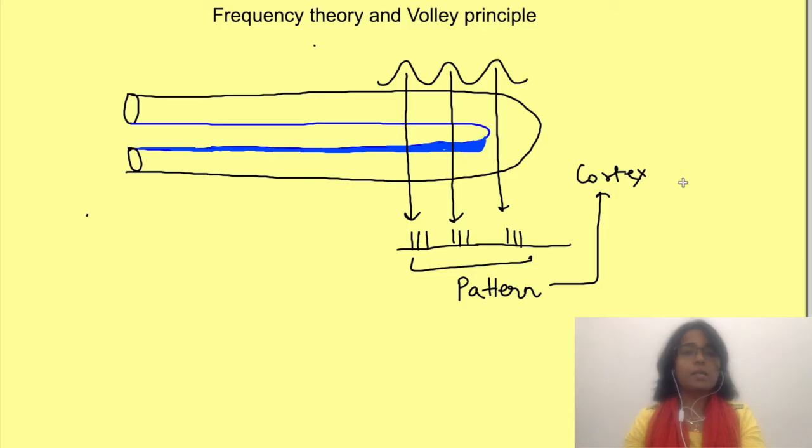But a single neuron cannot fire faster than 1,000 action potentials per second. Closer to this frequency, it will start getting action potentials with no pattern. Obviously, frequencies faster than 1,000 Hz have to be encoded by some other means.